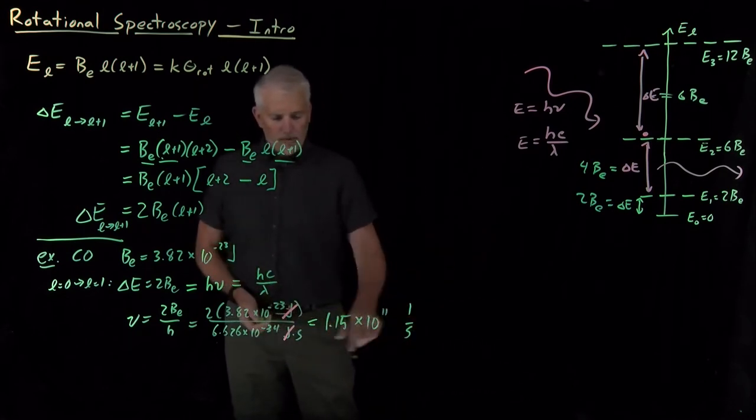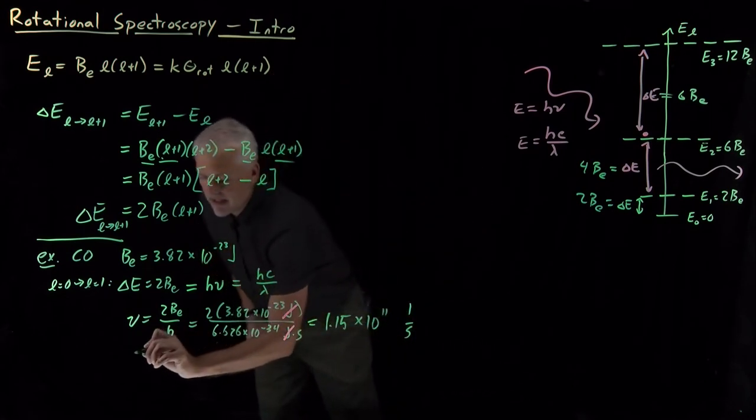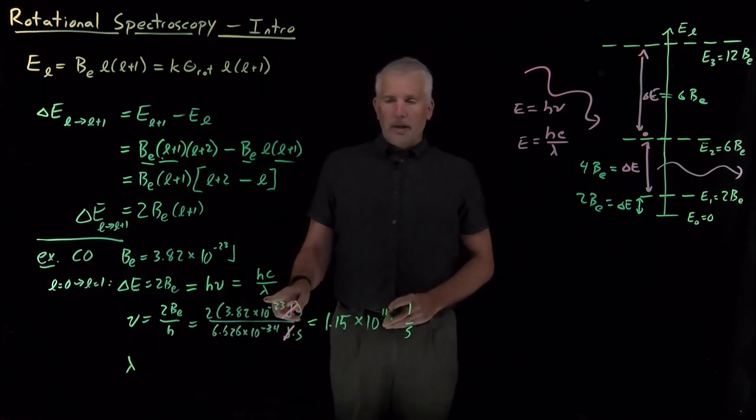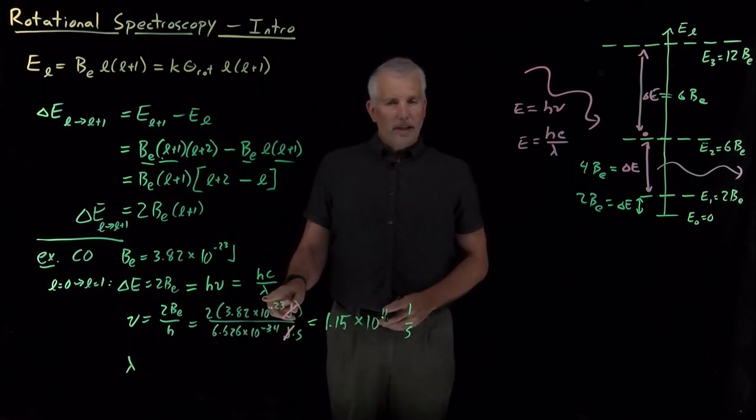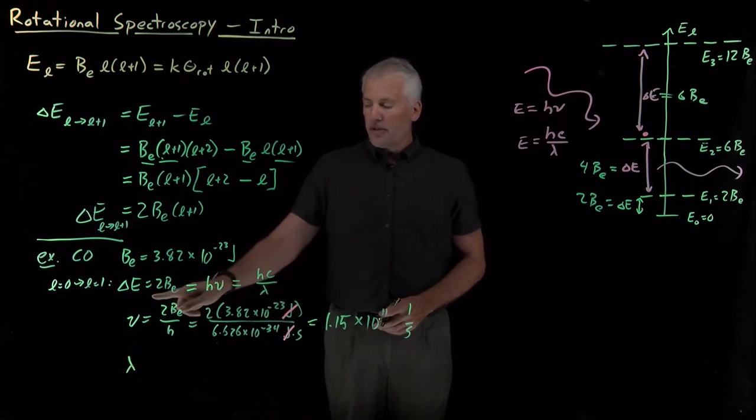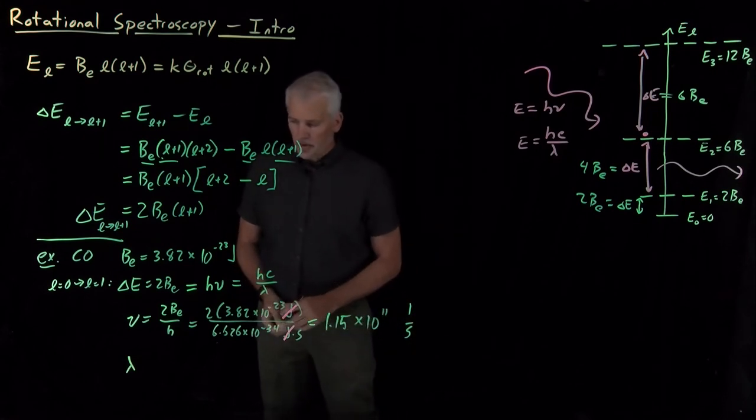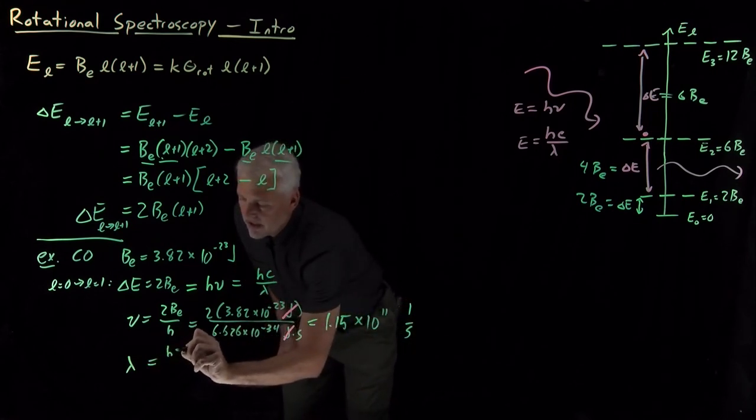That number perhaps is not terribly intuitive. Let's try instead the wavelength. We might get more information out of knowing what the wavelength of that photon would be. So if I rearrange 2B equal to hc over lambda, I'll get lambda is equal to h times c divided by twice the rotational constant.